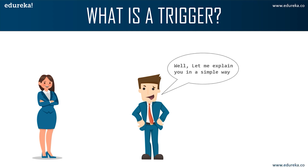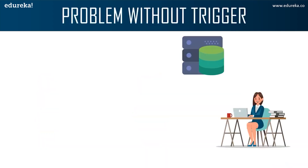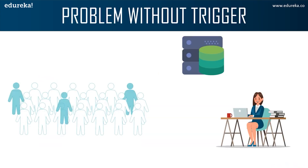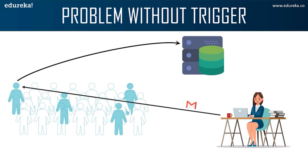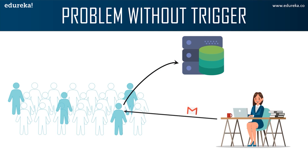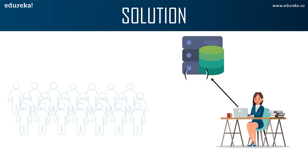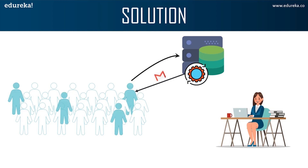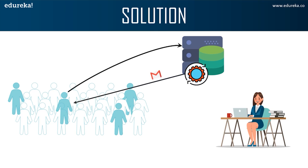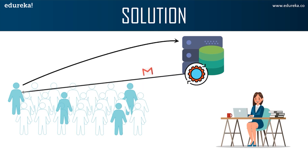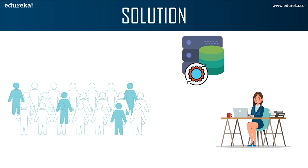Anna is a marketing officer in a company. When new customer data is entered into the company's database, she has to send a welcome email to each and every new customer. If it is one or two customers, Anna can do it manually, but what if the count is more than a thousand? It will be a repetitive and tiring job. In such a scenario, triggers come in handy. Anna can easily create a trigger which will automatically send a welcome email to new customers once the data is entered into the database. After creating a trigger, she doesn't have to monitor it frequently, and the efficiency of the work is increased.